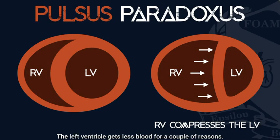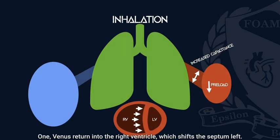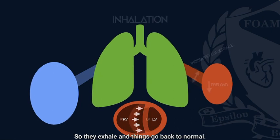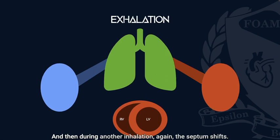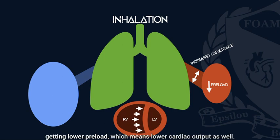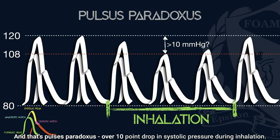This animation shows the main problem: the left ventricle gets less blood for a couple of reasons. One, venous return into the right ventricle shifts the septum left. Two, as the lungs expand, the blood vessels also get pulled open, just like the bronchioles. Then on exhalation things go back to normal, and during another inhalation the septum shifts again and the lungs hold more blood. This means the left ventricle is getting lower preload, which means lower cardiac output — and that's pulsus paradoxus: over a 10-point drop in systolic pressure during inhalation.